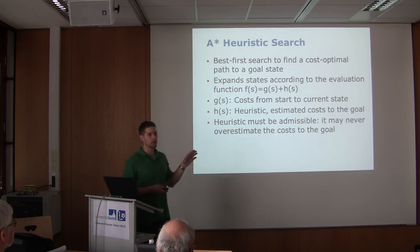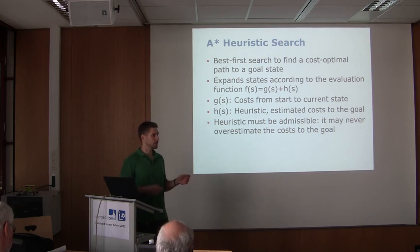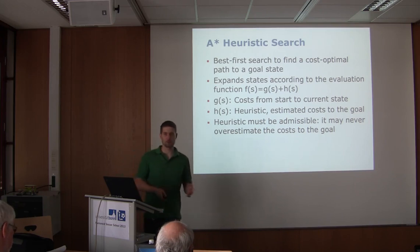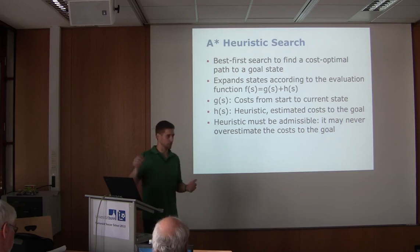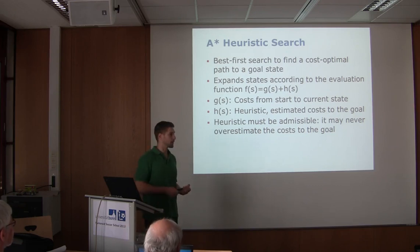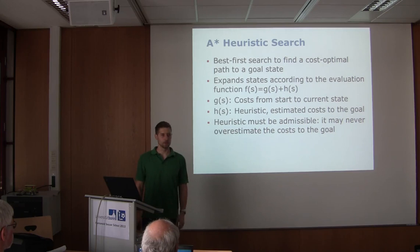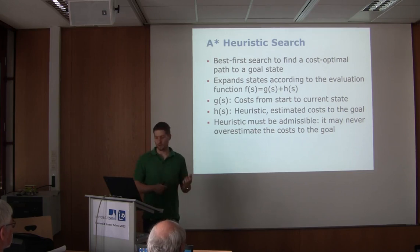The important point for A* to give the optimal solution is that the heuristic is admissible — it may never overestimate the costs to the goal. It may give the exact costs or underestimate them. A very popular choice is just taking the Euclidean distance from the current state to the goal, since this is the shortest path possible if there are no obstacles. For 2D planning on a grid with x,y coordinates as states, we can plan 2D paths very efficiently using four- or eight-connected neighborhoods.